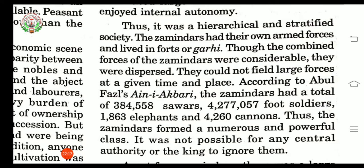The recorded numbers for the zamindars were: sawars — 384,558; foot soldiers — 4,277,057; elephants — 1,863; and cannons — 4,260. In this manner, the zamindars formed a very large and powerful class. This was the main reason that the king or any central authority could not ignore them.